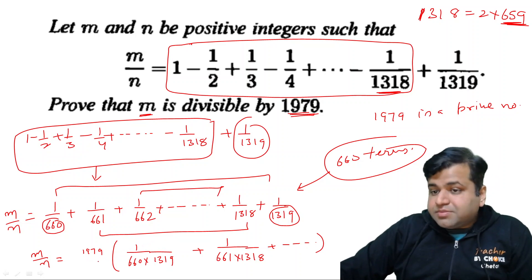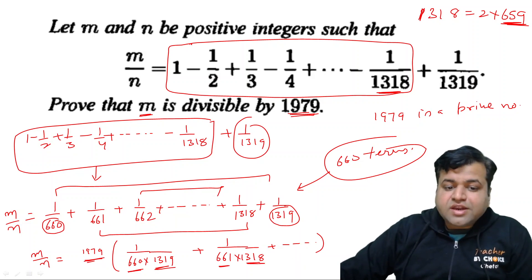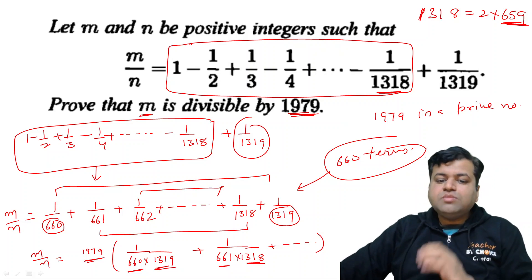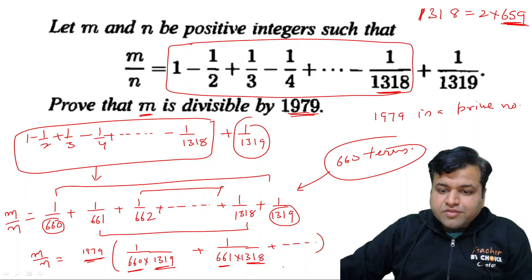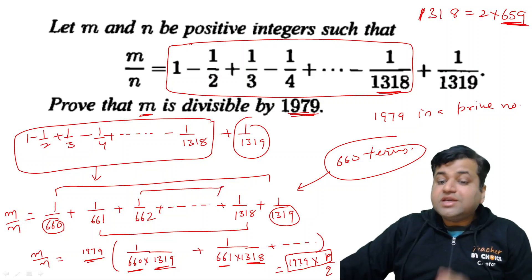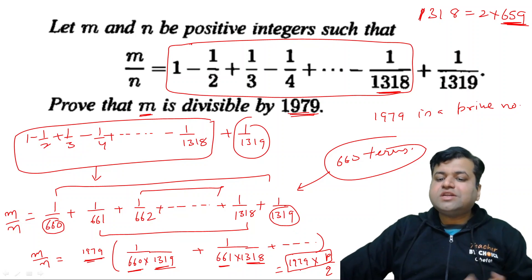So now, what we can claim? Clearly, 1979 is a prime number. So it cannot get cancelled out with any of these number. Why? Because all of these numbers are less than 1979 and 1979 is a prime number. So obviously, yeh denominator meh koja bhi ek factor nahi hai ga. So this should be of the form now, yeh abhi kya bane ga? 1979 into, let's say, this is obviously a rational number. Let's assume it to be p upon q.